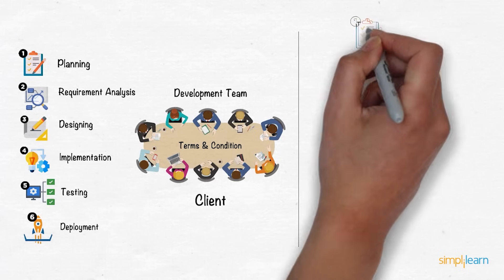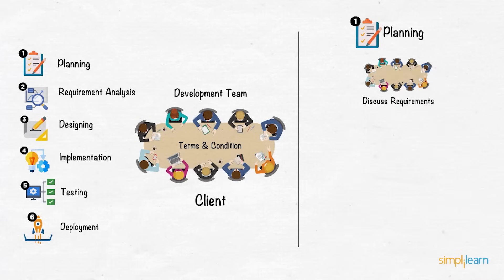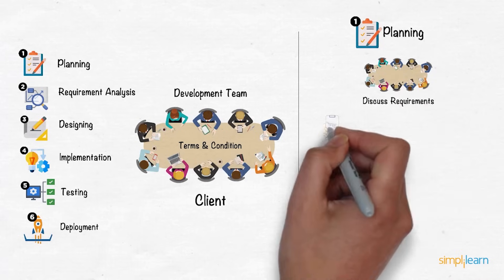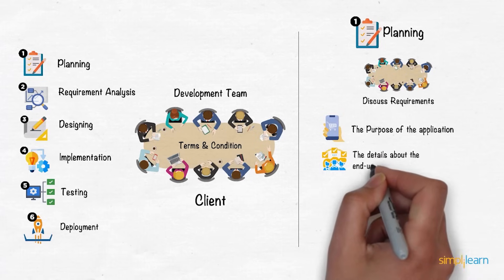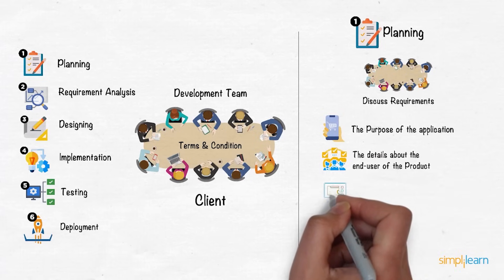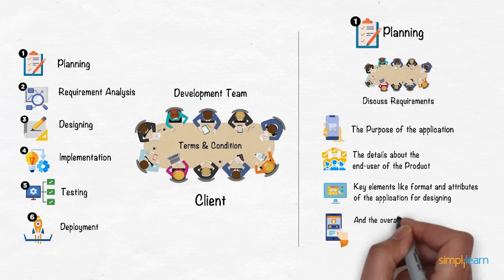Initiating the production with the planning requirements phase, where the client and the development team will discuss the basic requirements for the software, like the purpose of the application, the details about the end user of the product, key elements like format and attributes of the application for designing, and the overall user interface design of the software.